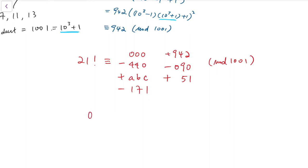We know on the left, we have 0, because 21 factorial contains 7, 11, and 13 inside,